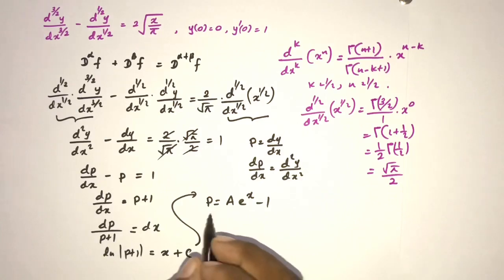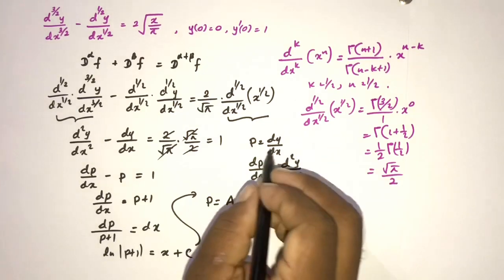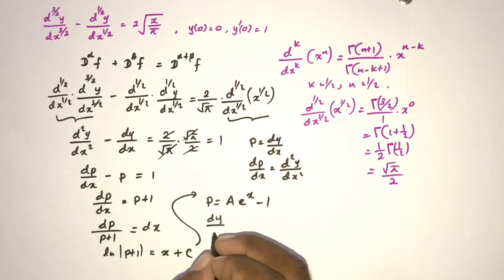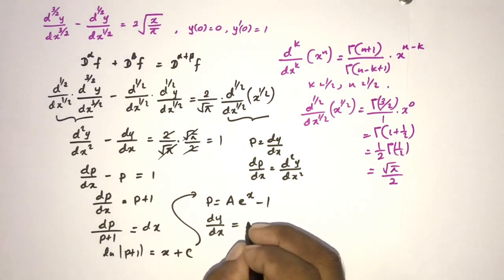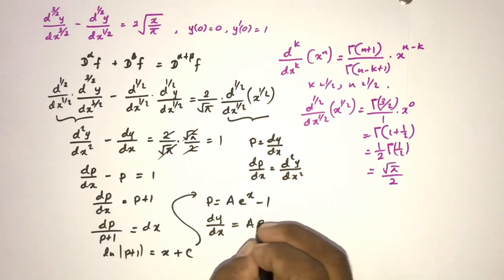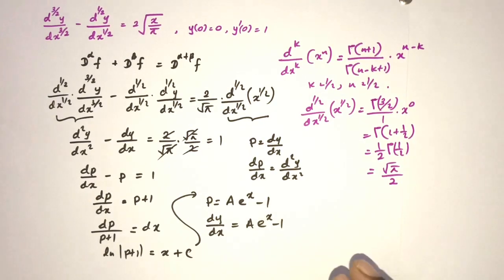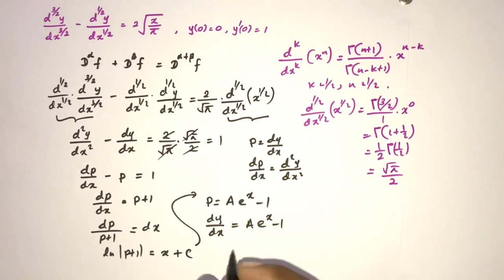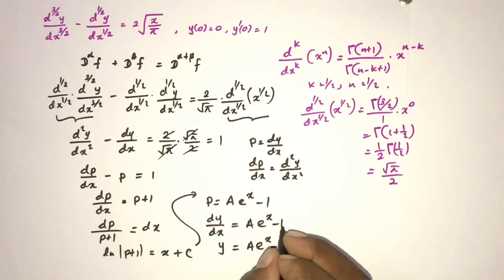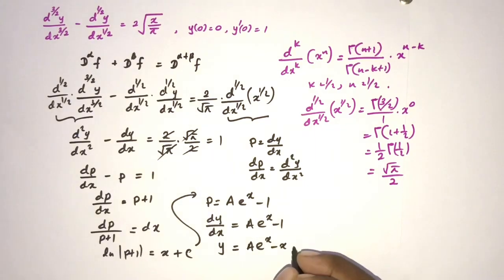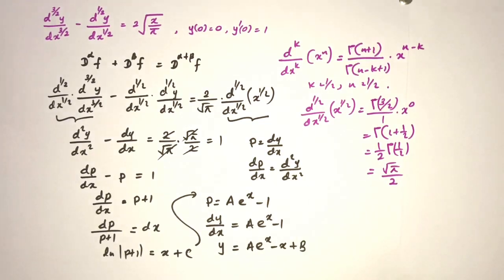So p + 1 = C·e^x, meaning p = C·e^x − 1. Since p = dy/dx, we integrate: y = A·e^x − x + B, where A and B are constants.